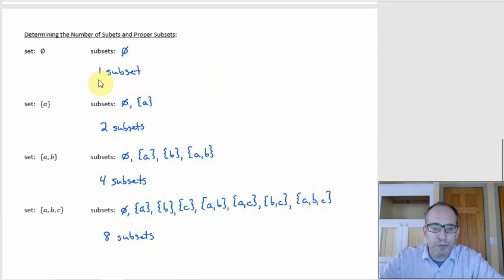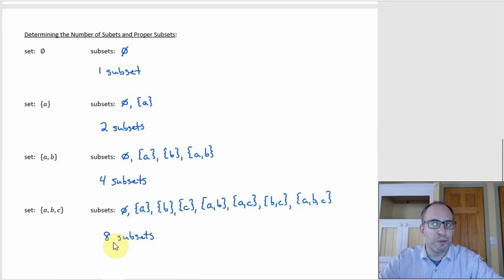Now we can see the pattern: it's 1, 2, 4, 8 — they're doubling. One times two is two, times two is four, times two is eight. If we had a set with four elements there would be 16 subsets, five elements would give 32. We just keep doubling, and that is the pattern.